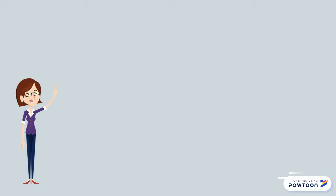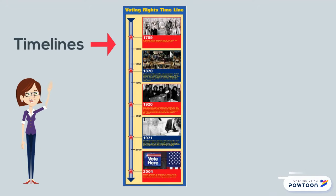You might see an author using a timeline. The author gives you a timeline if he wants you to see the order in which events happened. These are labeled by years.